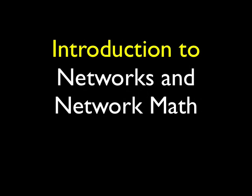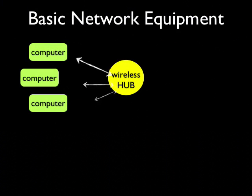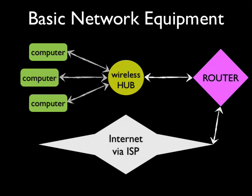This is a basic introduction to network equipment and network math. Imagine your home network with three computers connected wirelessly to an access point. The wireless computer network interface on each computer connects to the wireless hub. Your hub is connected to your DSL or cable modem, which is a network router. The purpose of the router is to connect your home network to another network, such as the Internet, through your ISP.